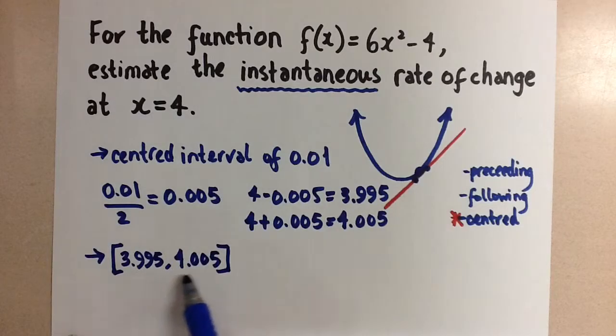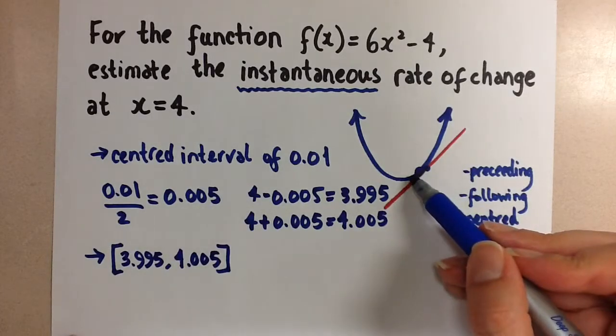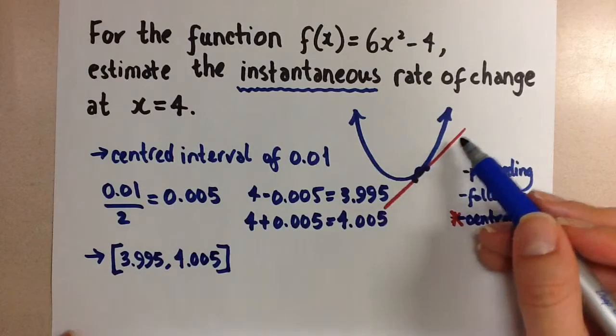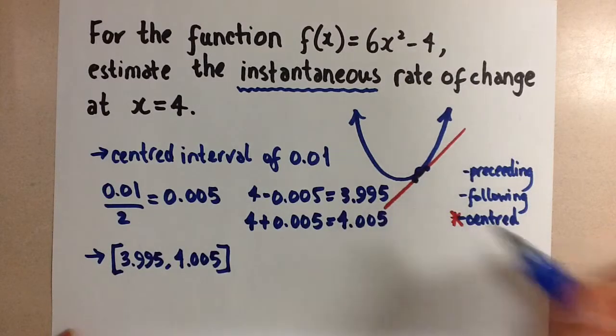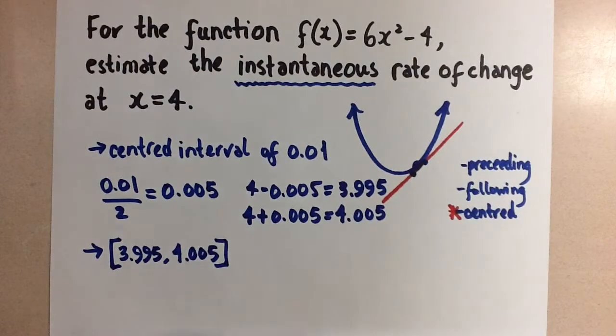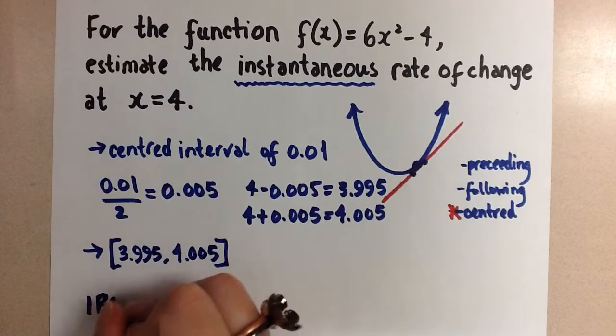And now, the interval we're using for the instantaneous rate of change is going to be from 3.995 to 4.005. You see that this is a very small interval just before and just after the 4, which gives us that secant line to find an estimate for the instantaneous rate of change at 4. So now we go ahead and use our formula for rate of change.